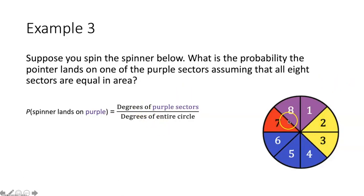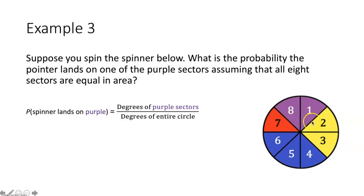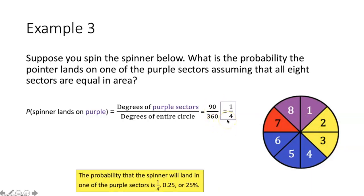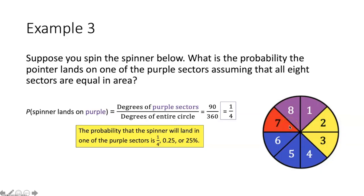Taking 360 degrees divided by 8 gives 45 degrees for each sector's central angle. The purple sector covers sector 8 and sector 1, so its central angle is 2 times 45, which is 90 degrees. Putting 90 over 360 and simplifying gives one over four. So the probability of landing in the purple sector is 1 over 4, or 0.25, or 25%.